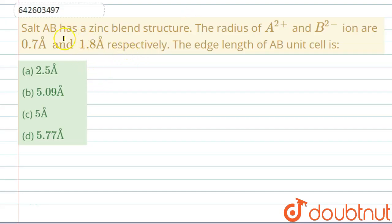Hello everyone, let's start this question. The question says salt AB has a zinc blend structure, and we are given the radius of A²⁺ and B²⁻ as 0.7 angstrom and 1.8 angstrom respectively. We have to find the edge length of the AB unit cell.